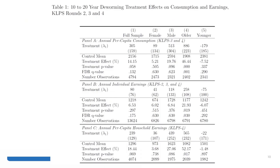Table 1 in the paper shows the effects from 10 to 20 years of the deworming program. We can see in column 1 for the full sample that the program induced a statistically significant increase in per capita consumption of about $305. There are also some positive effects in other outcomes such as per capita earnings, and for some subgroups — for instance, in individual earnings for older people.